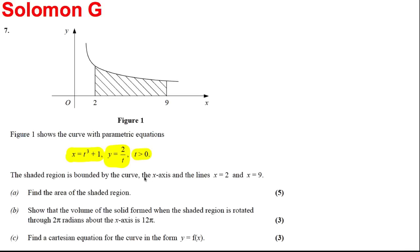The shaded region is bounded by the curve, the x-axis and the lines x is 2, that's the line x is 2, and x is equal to 9. And obviously it's bounded by the x-axis here, and it's bounded by the actual curve itself, which is here.